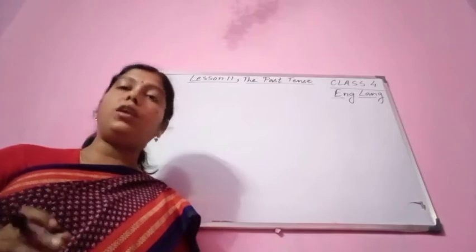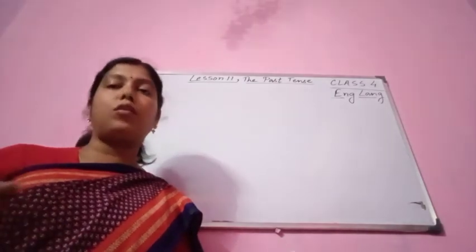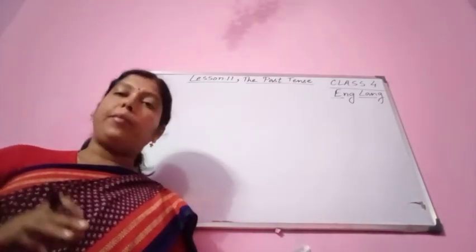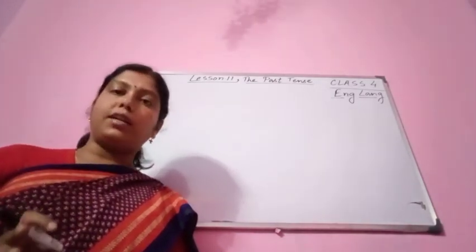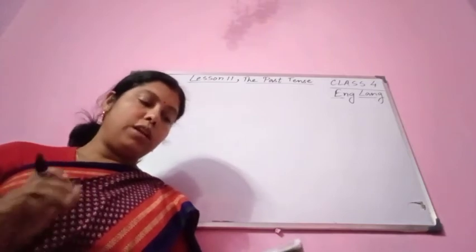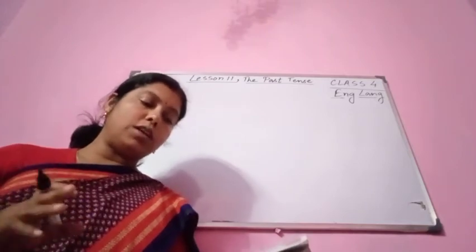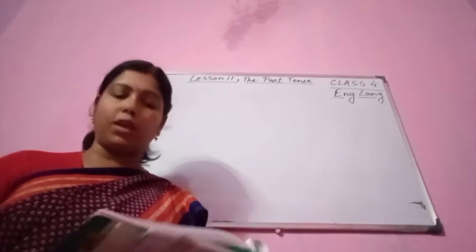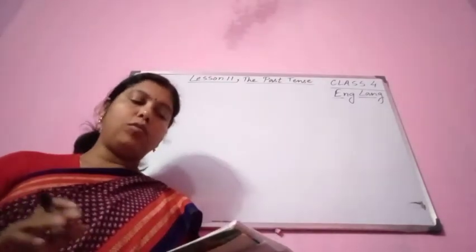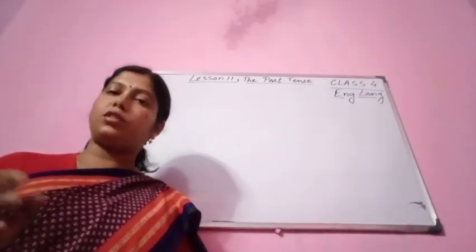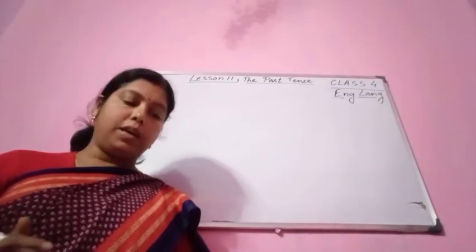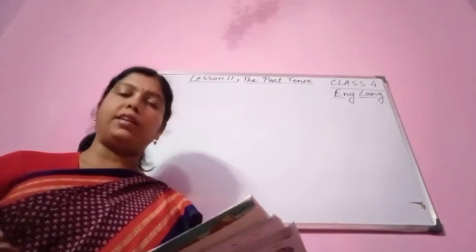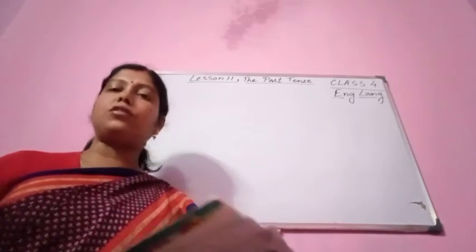For number one, 'Nakul iron clothes' is given. I am going to write only the answers on the board, so please follow. Nakul was ironing his clothes. You can write that down. Nakul was ironing clothes is also correct, but it would be better if you write Nakul was ironing his clothes.